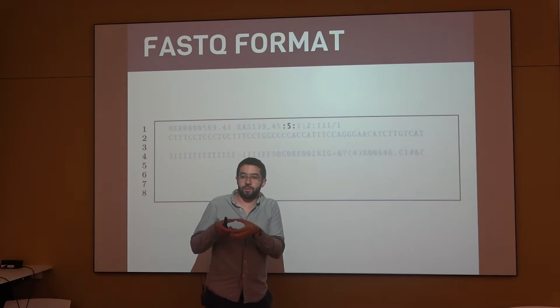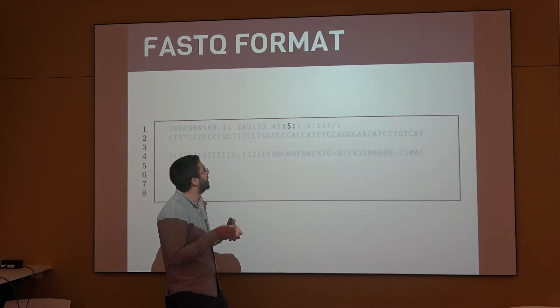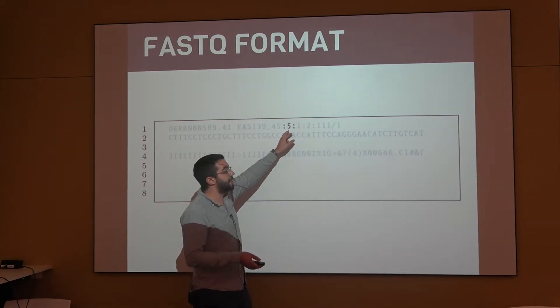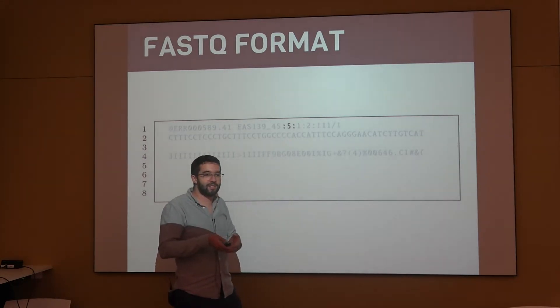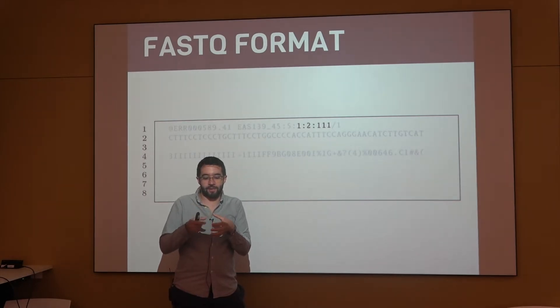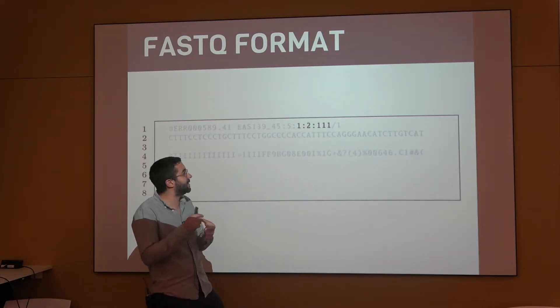So, each one of these chips where the sequencing takes place has eight lanes. Some of them have different numbers of lanes, but then this is going to tell you on which one of those eight lanes this read was sequenced, and then exactly what the location on that plate the sequence was located.